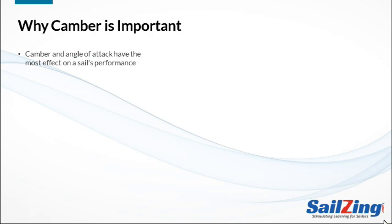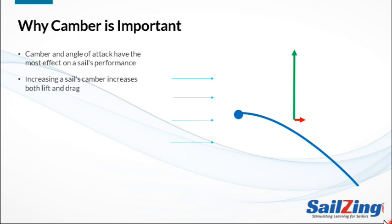A sail's camber is important because, along with angle of attack, camber has the most effect on a sail's performance. If you understand the basics of lift and drag, you'll know that a fuller sail creates more lift and more drag than a flatter sail. This is because the fuller sail deflects the moving air more than a flatter sail. Here's a flat sail with arrows representing the lift and drag produced. If we make the sail fuller — that is, give it more camber — we increase both the lift and the drag.